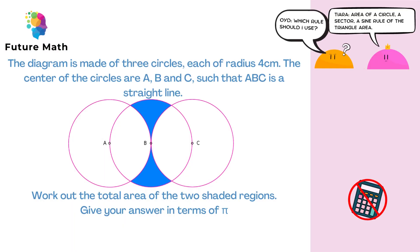So it says here, the diagram is made of three circles, each of radius 4cm. The centre of the circles are A, B and C, such that ABC is a straight line. Work out the total area of the two shaded regions. Give your answer in terms of pi.